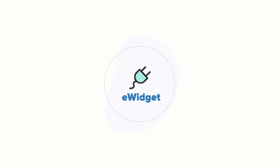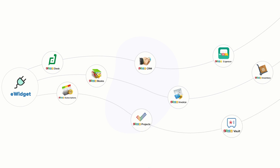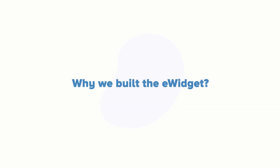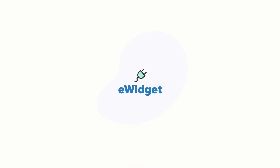The eWidget integrates with Zoho products like Desk, CRM, Expense, Books, Invoice, Inventory, Subscription, Projects, and Vault. We've also integrated with third-party tools like Zendesk, Asana, Full Contact, and Clearbit. We know that sometimes emails bring in information that you would want to use to create tasks, leads, or tickets in other tools. So instead of going back and forth between your inbox and those tools, we decided to bring those tools into your inbox through eWidget.